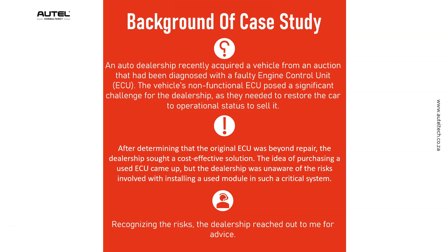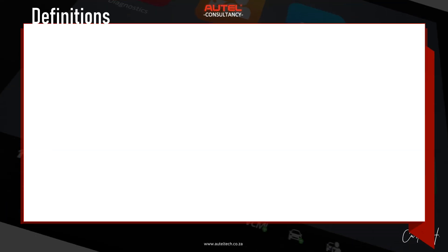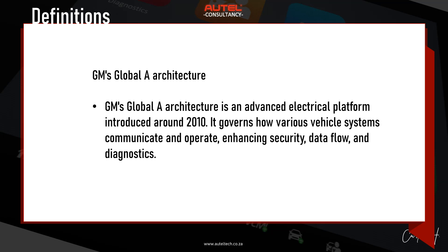This is the educational process I had to share with the client. First, I had to show them about GM's Global A architecture. In a nutshell, GM's Global A architecture is an advanced electrical platform introduced around 2010 that governs how various vehicle systems communicate and operate, enhancing security, data flow, and diagnostics. To be honest, it's just a bunch of extra complexity — they're making our lives more miserable, and it doesn't make sense when their new modules have a six-month back order.